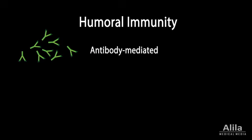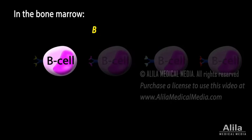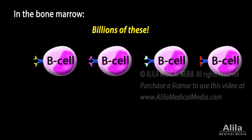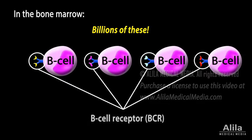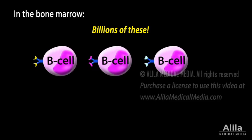The major players of humoral immunity are B cells. They develop in the bone marrow and complete their maturation in the spleen. Similar to T cells, B cells are formed in billions of variations, each carrying a unique surface protein called B cell receptor, BCR. Just like T cells, they also learn to not react to the body's own antigens. Those that react to self-molecules are eliminated or ignored.